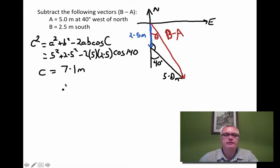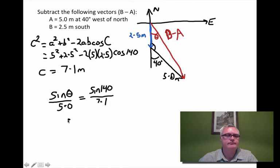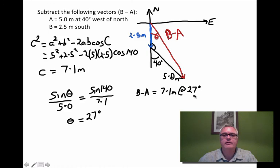Now, to find the direction, I use my sine law. So sine of that angle over the opposite side, which in this case is the 5 meters, is going to be equal to the sine of this angle, 140, over the 7.1, which we just calculated. And again, putting that into my calculator, I find that it is an angle of 27 degrees. So, final answer, B minus A is 7.1 meters at 27 degrees east of south.